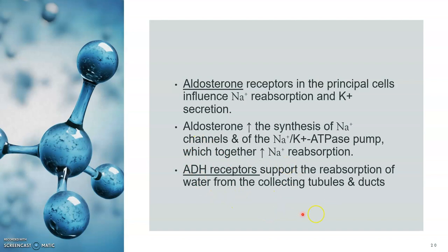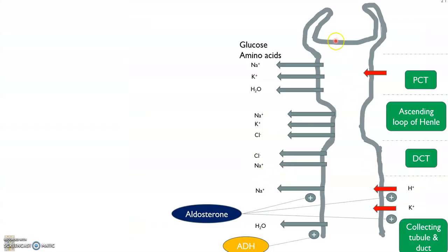So this is quite a basic fact that most students know. Looking at a simple diagram from Lippincott, we have the Bowman's capsule and PCT, then the ascending loop of Henle, DCT — distal convoluted tubule — and then the collecting tubule and ducts. We have glucose and amino acids reabsorbed here, then sodium, potassium, and water being reabsorbed in the PCT; sodium and potassium being reabsorbed again, along with chloride in the ascending loop of Henle; then in the distal convoluted tubule, sodium and chloride being reabsorbed; and in the collecting tubule and duct, sodium and water being reabsorbed.